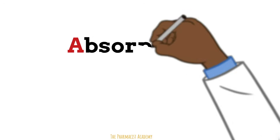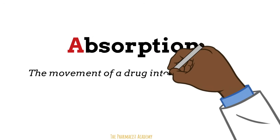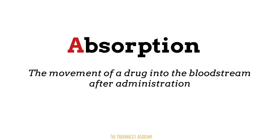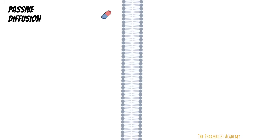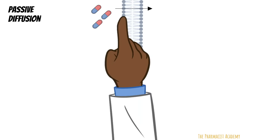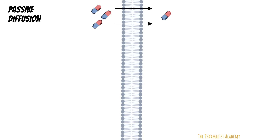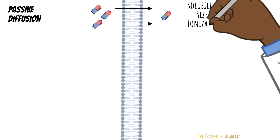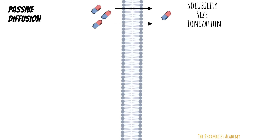The first parameter is drug absorption, which is defined as the movement of a drug into the bloodstream after administration. Unless the drug is administered directly into the bloodstream, it would have to cross some membranes before it gets there, using different methods. The first is passive diffusion, where the drug moves from an area of high concentration to low. Drugs that are lipophilic can cross the lipophilic membrane easily, as can smaller-sized drugs. Drugs that have a charge have more difficulty crossing because the charge makes them more hydrophilic instead of lipophilic.